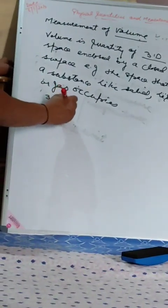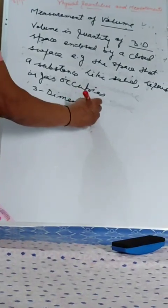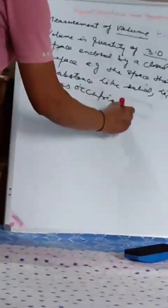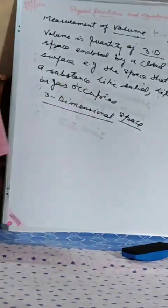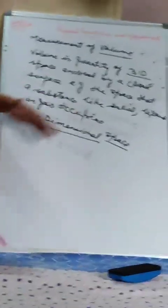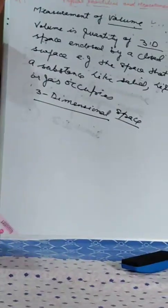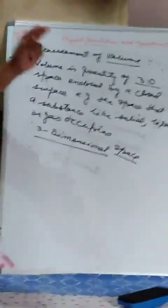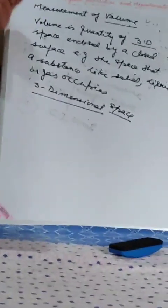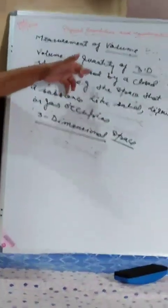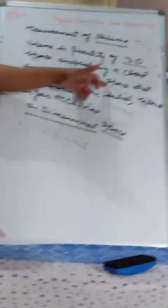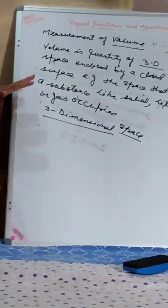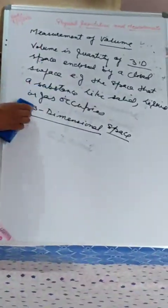You must be thinking about what 3D means. 3D means three-dimensional. Before I explain three-dimensional space, let me repeat the definition of volume once more: the amount of space contained in a body. Another definition: volume is the quantity of 3D space enclosed by a closed surface, for example, the space that a solid, liquid, or gas occupies.